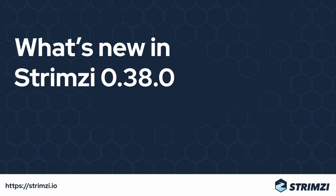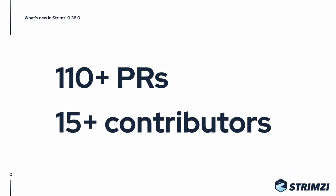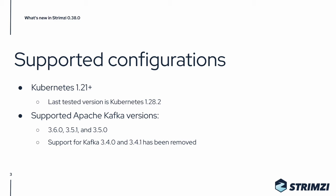Strimzi 0.38 is out and as always we have for you a short video going through the main changes. This release has over 110 PRs from over 15 contributors. In this release we support Kubernetes 1.21 and newer and the last tested version is Kubernetes 1.28.2.